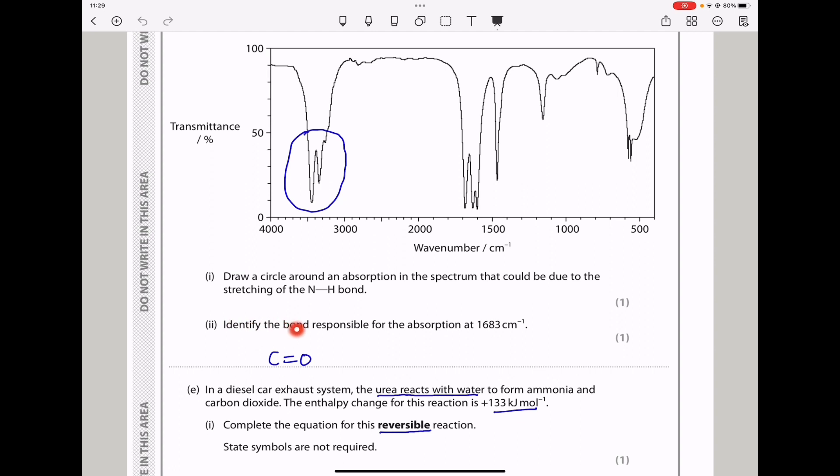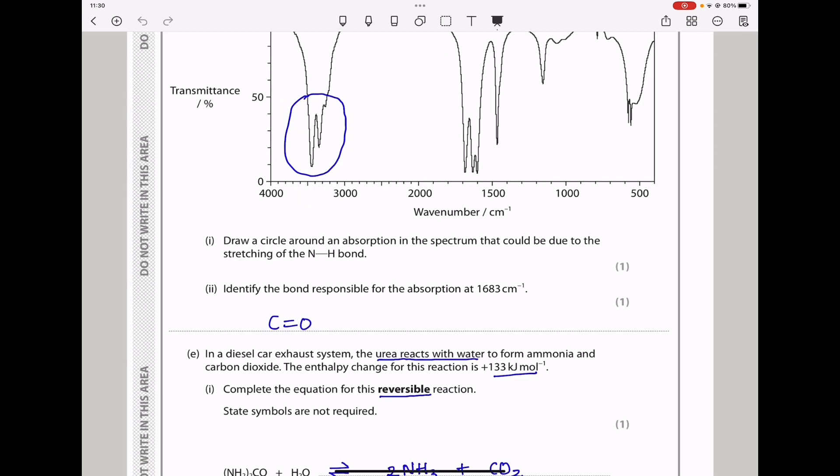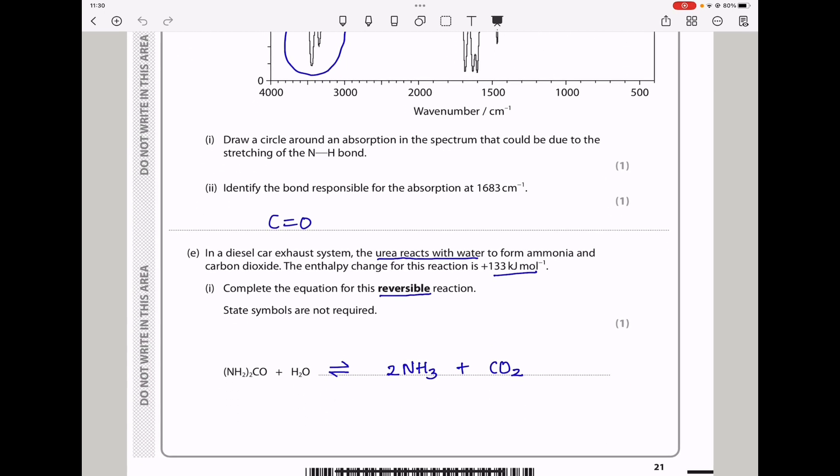The stretching of nitrogen-hydrogen based on the data booklet is going to be within this range. So we can know this peak is going to be the one corresponding to that specific stretch. So I circle this peak here. And then next they say, identify the bond responsible for the absorption at 1683 per meter. This is going to be due to the carbon-oxygen double bond stretch in urea.